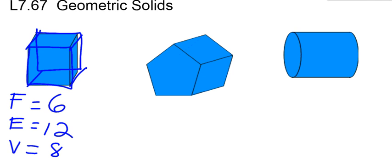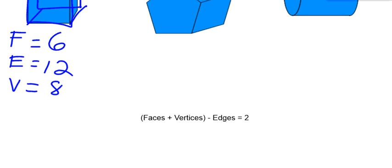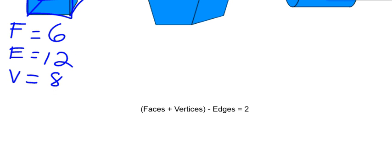The vertices are the corners, and a cube has eight. How do I know I'm right? There's Euler's formula. Faces plus your vertices minus your edges should always equal two. If I take my faces of six and eight vertices, that gives fourteen minus my edges of twelve equals two.